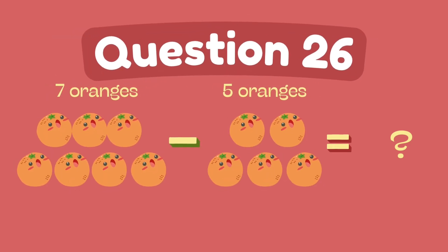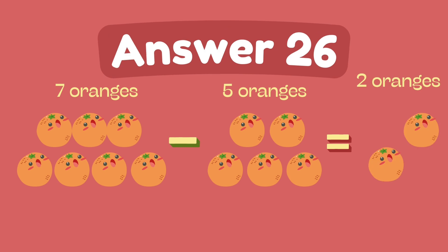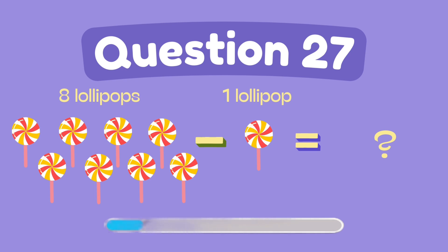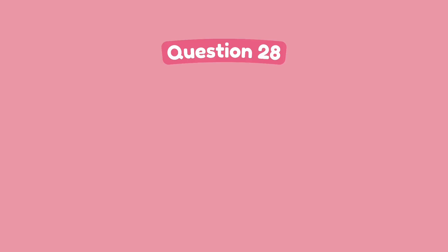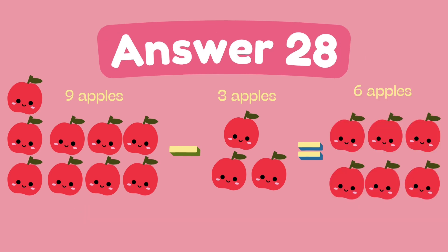What is 7 minus 5? The answer is 2. What is 8 minus 1? The answer is 7. What is 9 minus 3? The answer is 6.